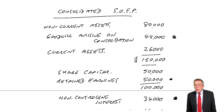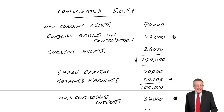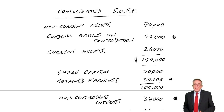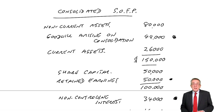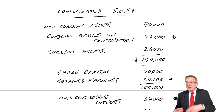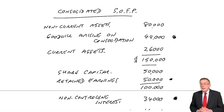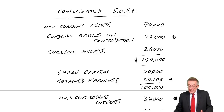I will need one more lecture on this chapter to do with what we call inter-entity transactions. Because we do have two separate companies — P and S — and you can have a situation where P has been selling goods to S, or S has been selling goods to P. As you'll see, it does mean a little extra adjustment. But that's the next lecture.